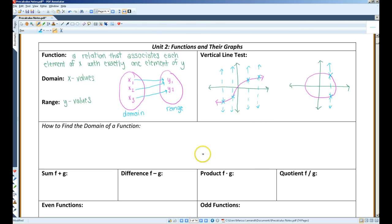For example, this is the cube root of x. Every vertical line that I draw through the graph only intersects the graph once. So this would be the function, or the graph of a function.